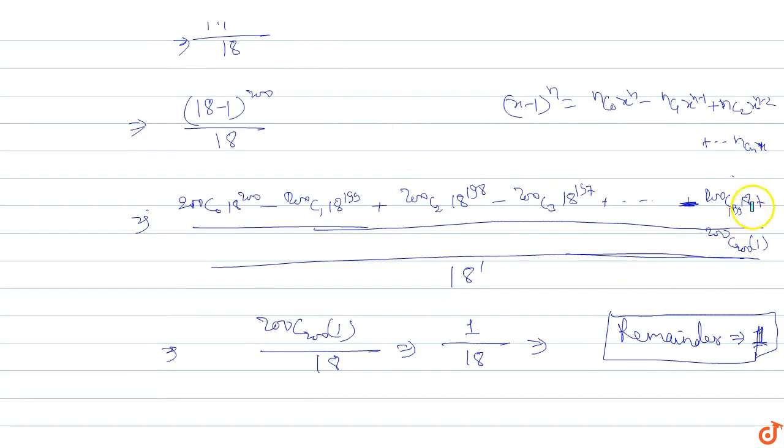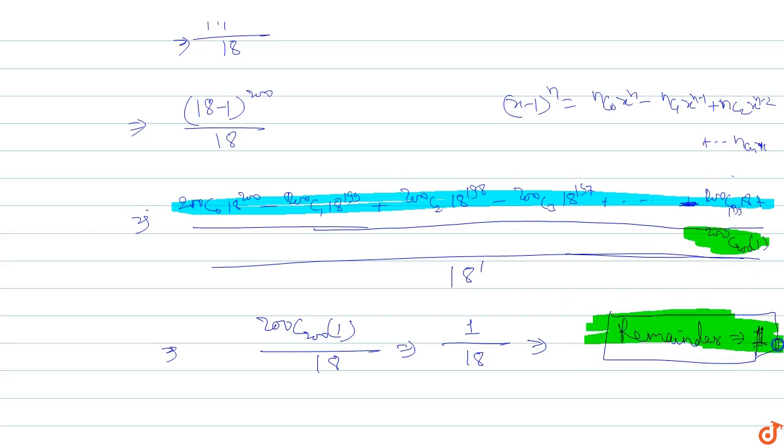So in this problem, all terms are zero. The main method shows that only 200C200 remains, and the answer is one. This is the answer when 17 power 200 is divided by 18.